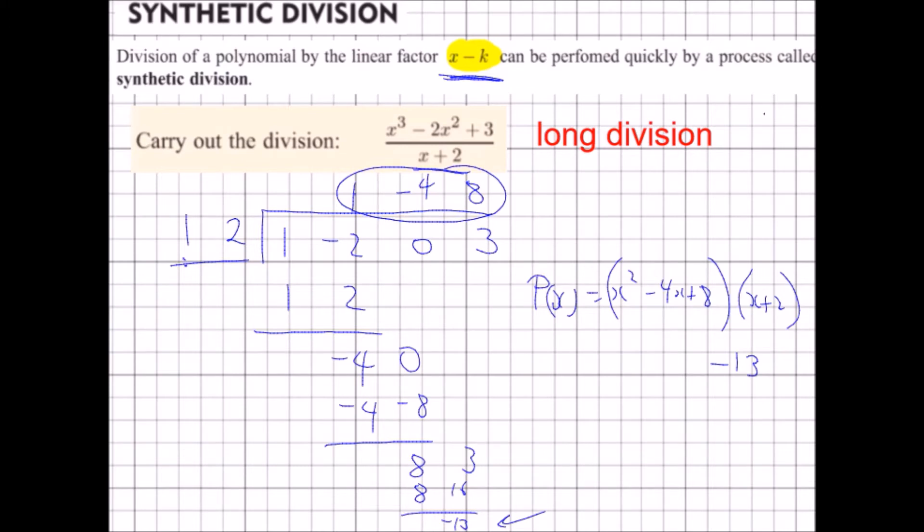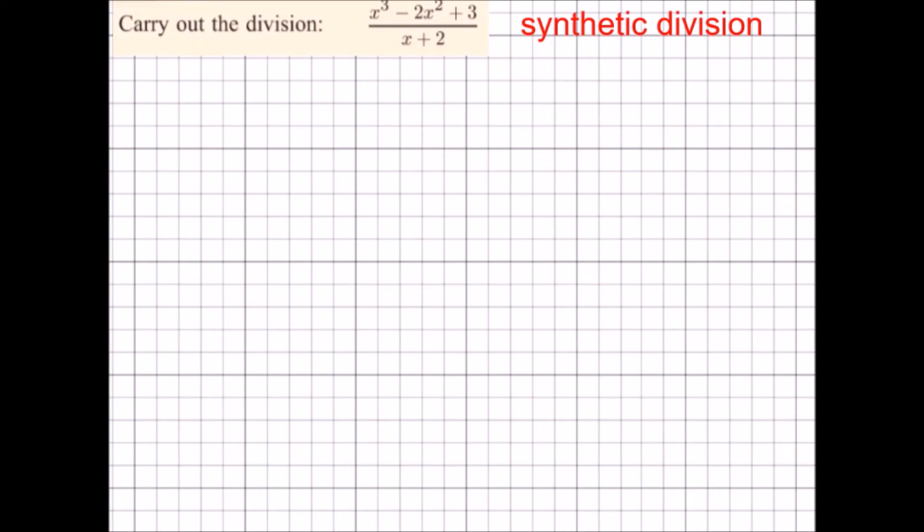If I were to do it using synthetic division, then what I do is I get the zero from my divisor, which is negative 2. So I now write my cubic: 1, negative 2, 0, and 3. Now, unlike the long division, I'm going to add the 1 and the 0, multiply the negative 2 and the number down here, and write the result there.